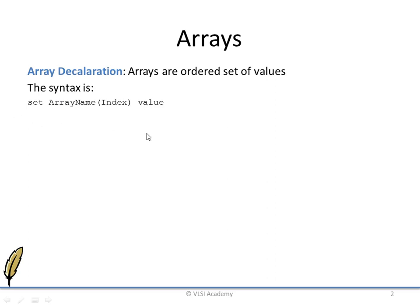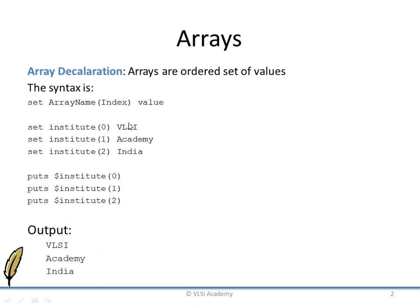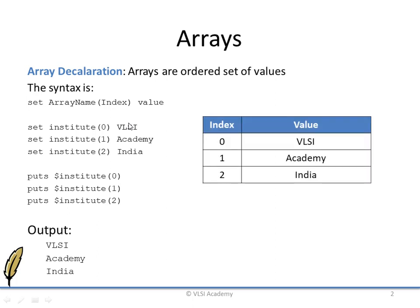The way of writing the array declaration is different from C. Using this syntax, we will create one array where the array name is 'Institute'. The first index is 0, storing the value VLSI; the second index stores Academy; the third index stores India. To print this array we use the 'puts' statement: puts, then the array name as a variable and the index value. The output will be the value at index 0, which is VLSI. This is the graphical representation of how our array is stored in the TCL shell.